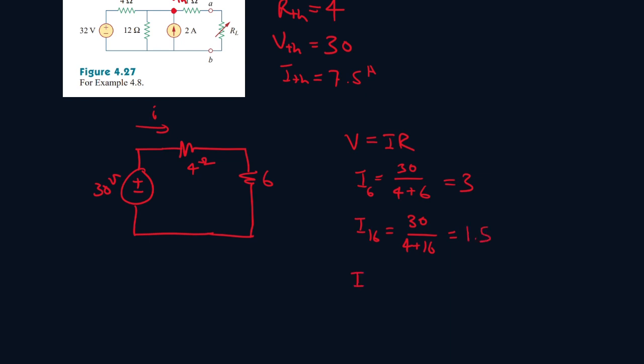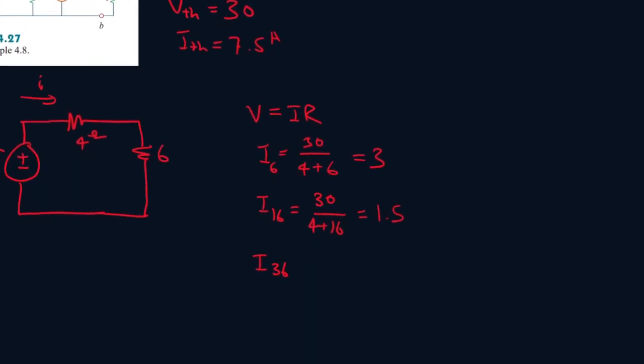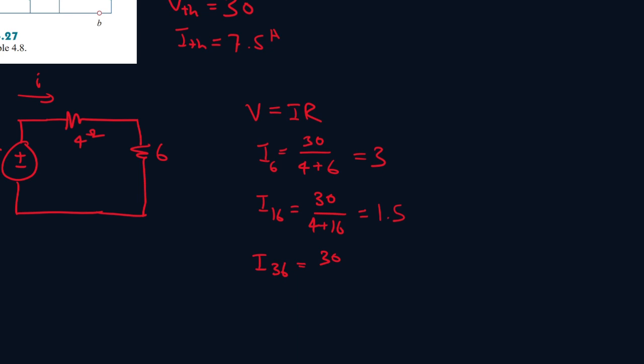And then what about I36. So I36. It's 30 divided by 4 plus 36. And that's 0.75. Alright so those are your final answers.